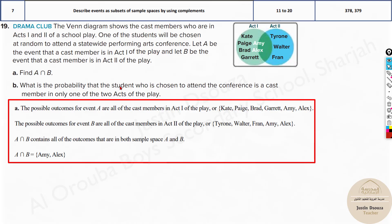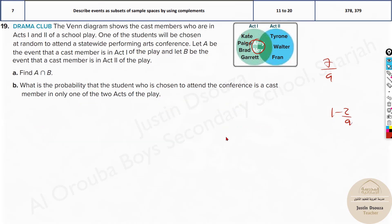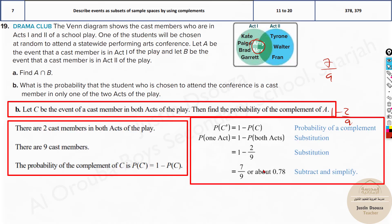What is the probability that the student chosen is a cast member in only one of the two acts? Other than Amy and Alex, all others are only in a single act: Kate, Paige, Brad, and Garrett are only in Act 1, while Tyron, Walter, and Fran are only in Act 2. That's 7 students in only one act. Total is 9, so the answer is 7/9. Alternatively, 1 minus 2/9 also gives 7/9.